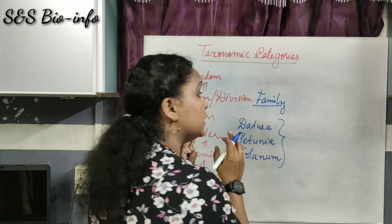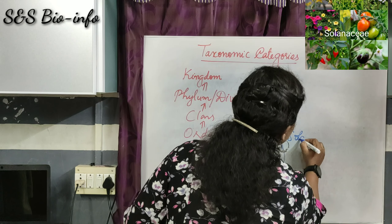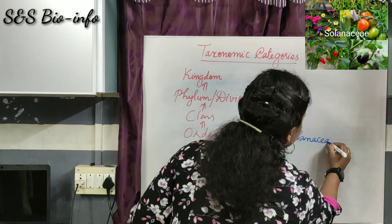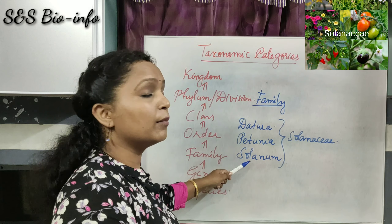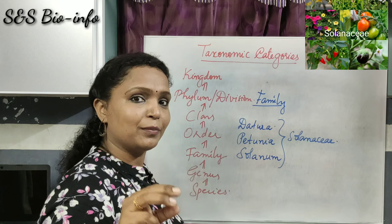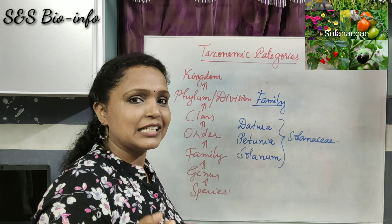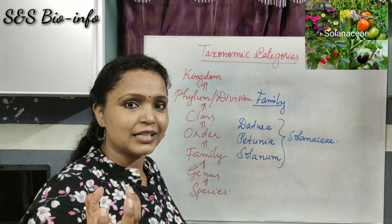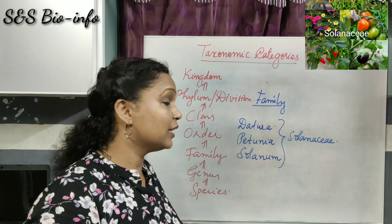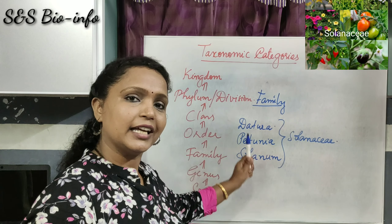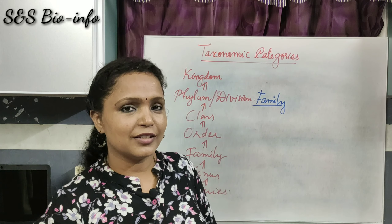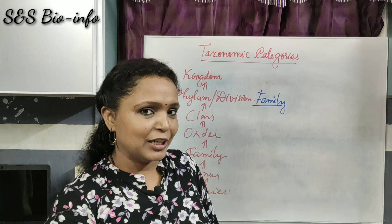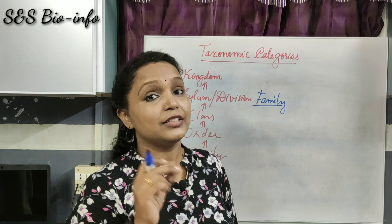Datura, Petunia, and Solanum are three different genera, but they are closely related as they have some similarities in vegetative parts and reproductive parts, so they come under the same family Solanaceae. For animals, the genus Panthera and the genus Felis come under the same family Felidae.